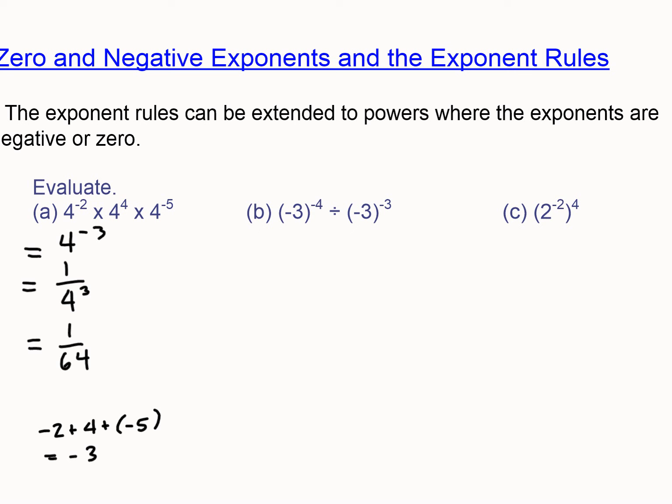Here, our bases are the same, and we're dividing. So what we do is subtract. Be careful, because you are subtracting a negative. So watch out. Remember, we can add the opposite, and we actually get negative 1 when we do that. So just watch out for that one.